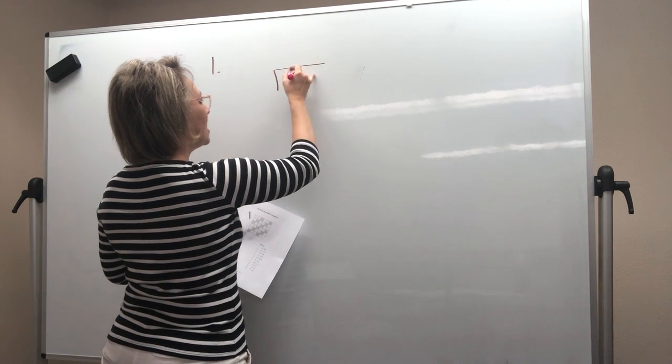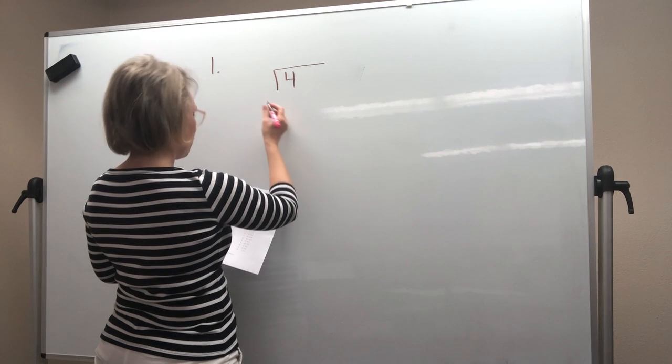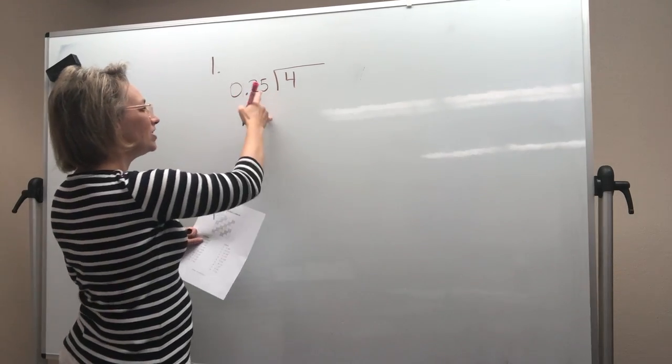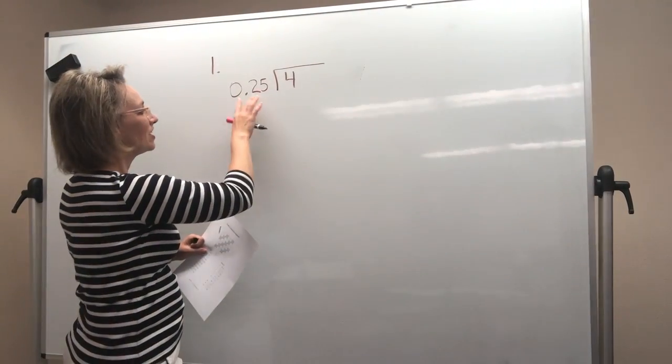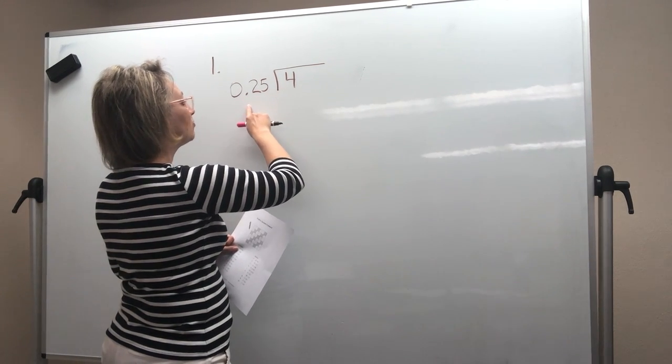So here's our division box. That means the 4 goes in here because it's the 4 divided by 0.25. So notice the 0.25 is out here. It's the divisor. 4 is what's getting divided up. So 4 divided by 0.25.